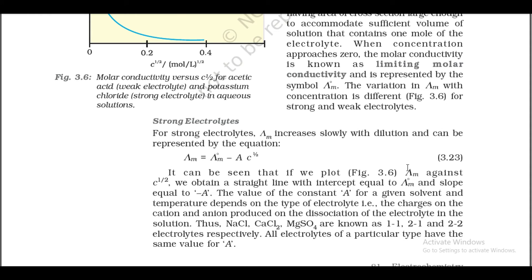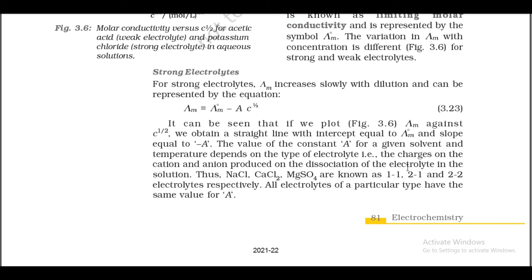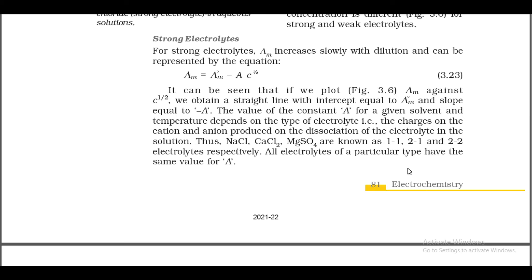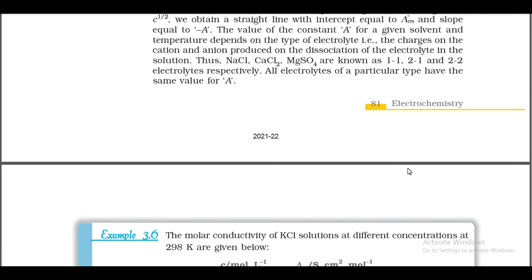For strong electrolytes, λm increases slowly with dilution and follows: λm = λ°m − A√c. Plotting λm against √c gives a straight line with intercept λ°m and slope −A. The constant A depends on the type of electrolyte — for example, NaCl (1:1), CaCl₂ (2:1), and MgSO₄ (2:2) — all electrolytes of a particular type have the same value of A.